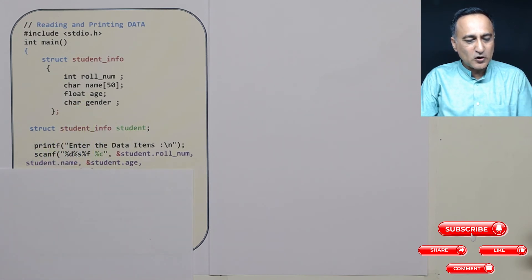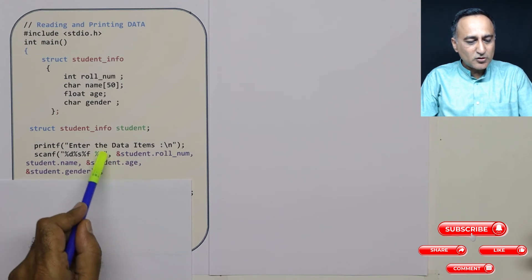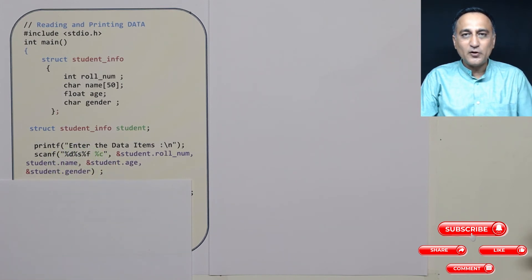Gender is again a character, so it is address of student.gender. So this is the way I read data into a structure.